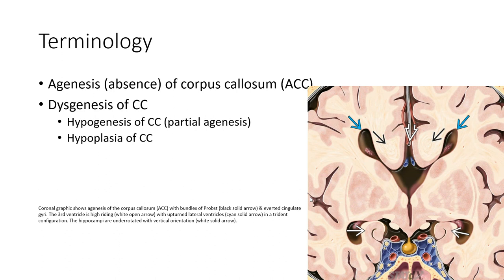So let's see the image to explain about it. This schema is the coronalography of the corpus callosum with bundle of ropes and a vertical sulci. The third ventricle is high-riding with parallel lateral ventricles in a trident configuration. The hippocampus is rotated with vertical orientation.